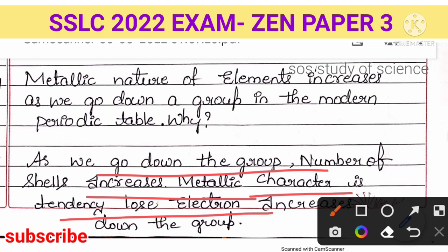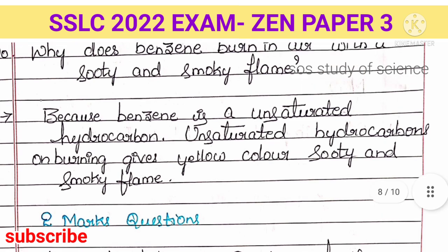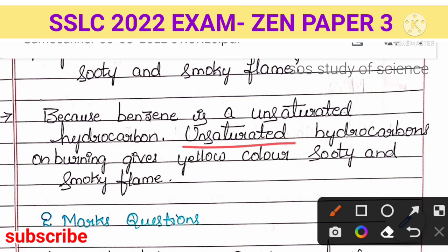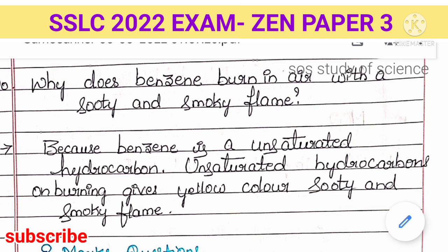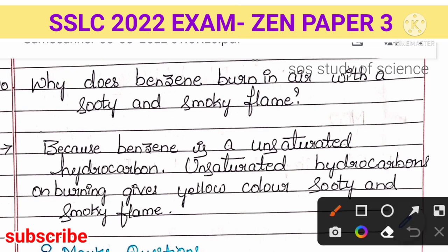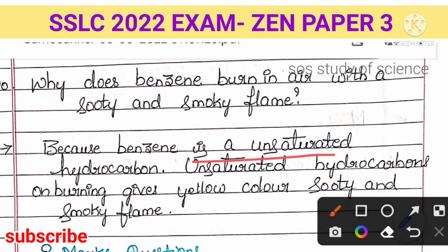Next question: why does benzene burn in air with a sooty and smoky flame? Benzene is an unsaturated hydrocarbon. All unsaturated hydrocarbons burn to give a yellow, sooty, or smoky flame. So when benzene burns, it releases a sooty and smoky flame because it is an unsaturated hydrocarbon. This is a straightforward answer even though benzene's structure is primarily covered in your textbook.